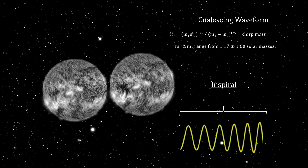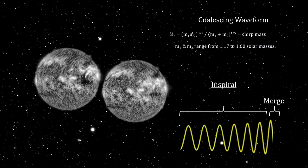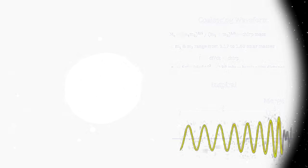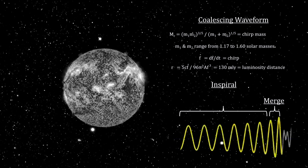This waveform indicated that the masses fit the profile for neutron stars, and that the luminosity distance to the source was around 130 million light years.